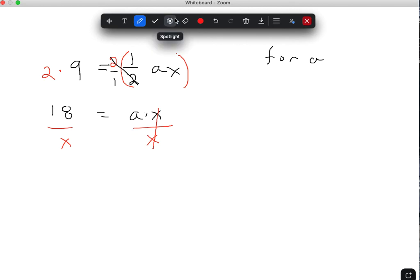And then that other side is our solution. So 18 over x would equal a. So just remember addition and subtraction go together. So when you see addition, you subtract. When you see subtraction, you add. And then multiplication and division go together. So when you have division, you would multiply. And when you have multiplication, you would divide.